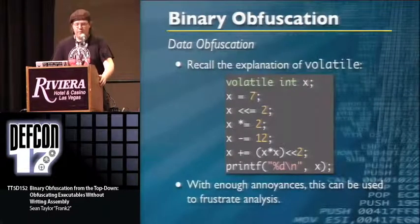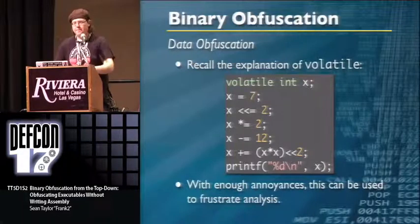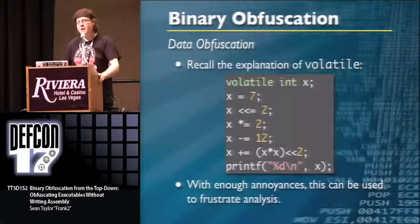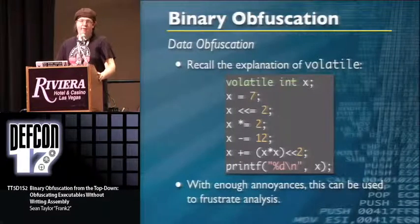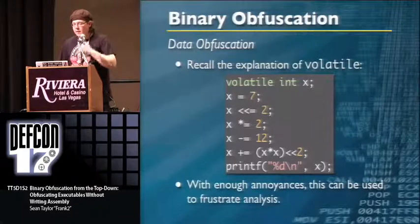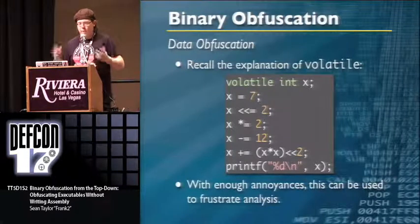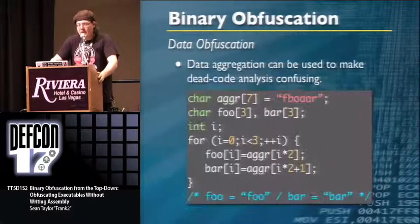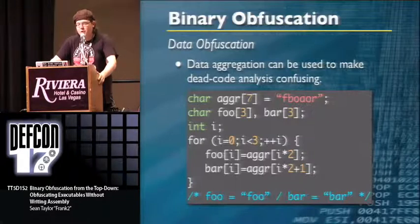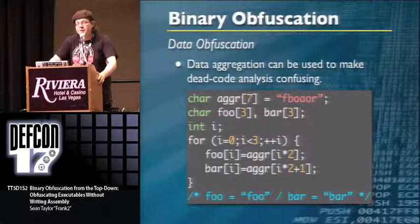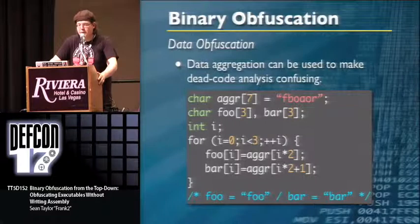Going back to the volatile keyword example: it's easily circumvented by setting a breakpoint when the math ends. But if you employ control flow obfuscation alongside it to prevent people from finding where the computation ends, you can do a whole lot more with that data. Data aggregation is another technique — at dead code analysis time, your data is just a strange nonsense string, but at runtime you put it back together. In the example, foo and bar become the strings 'foo' and 'bar' via a loop — though they're not null-terminated so printing them would cause problems.